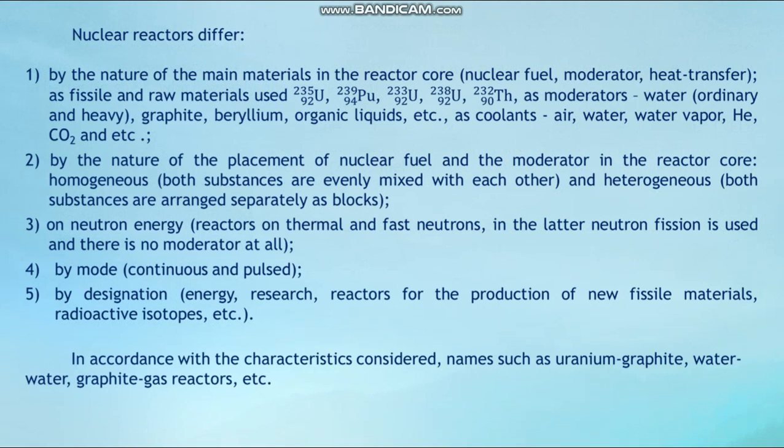Second, by the nature of the placement of nuclear fuel and the moderator in the reactor core: homogeneous — both substances are evenly mixed — and heterogeneous — both substances are arranged separately as blocks. Third, by neutron energy: reactors on thermal and fast neutrons. In fast neutron reactors, fission is used and there is no moderator at all. Fourth, by mode: continuous and pulsed.